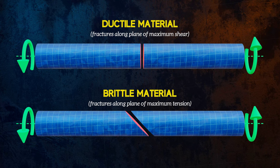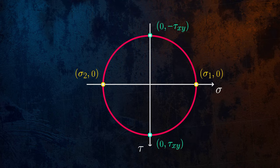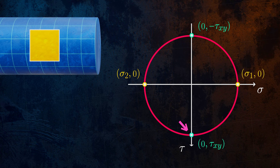Mohr's circle for pure torsion looks like this. We can see that when our stress element is oriented this way, the shear stresses are at their maximum values, and we have no normal stresses.